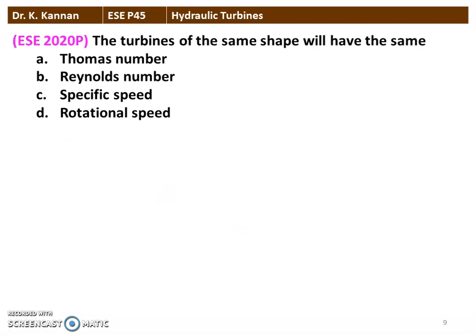The next question from the 2020 question paper: turbines of the same shape will have the same — Thomas number, Reynolds number, specific speed, or rotational speed? Thomas number is connected with cavitation; Reynolds number distinguishes laminar from turbulent flow; rotational speed is measured by tachometer. The correct answer is specific speed, which is the important design parameter used to compare hydraulic turbines.